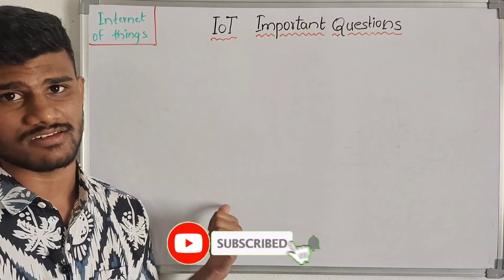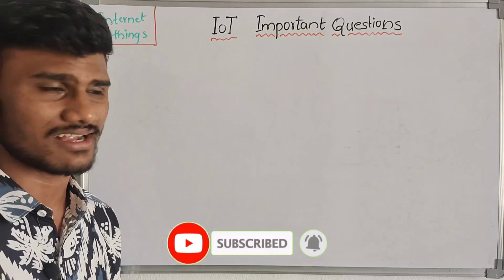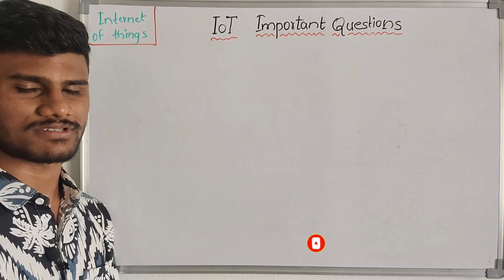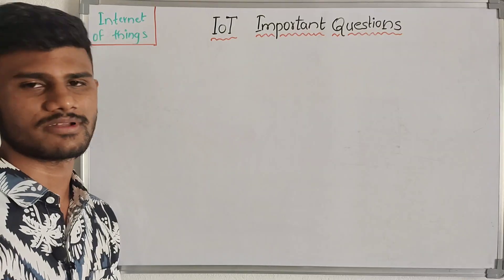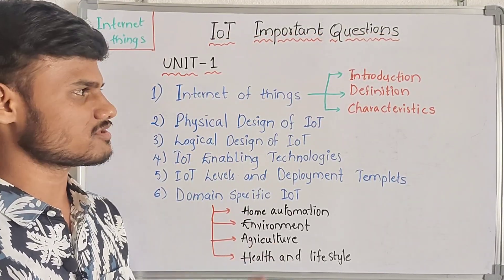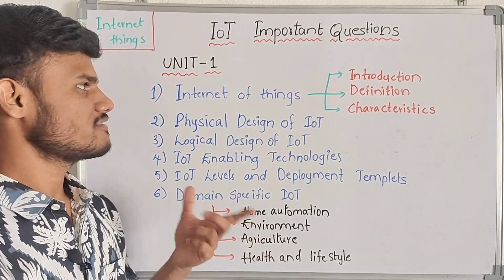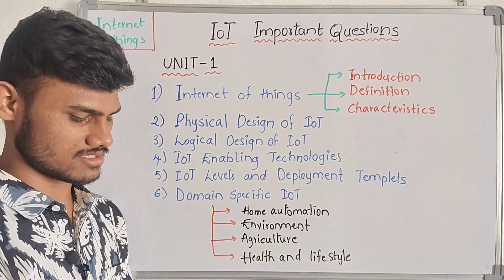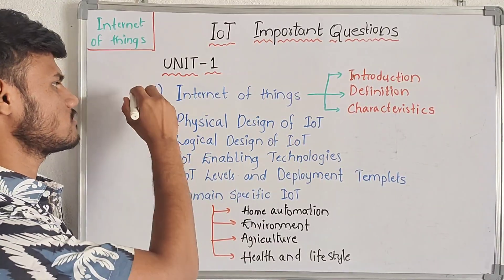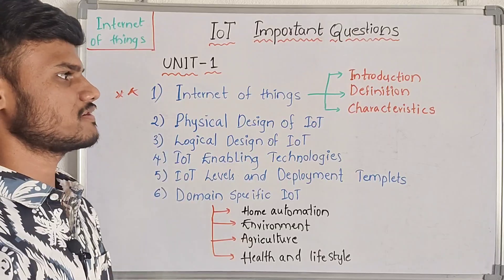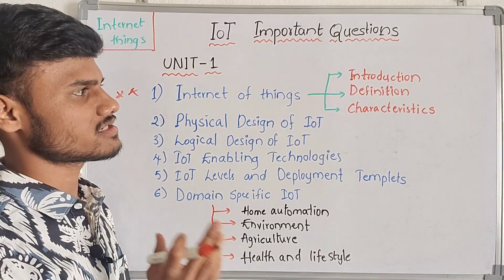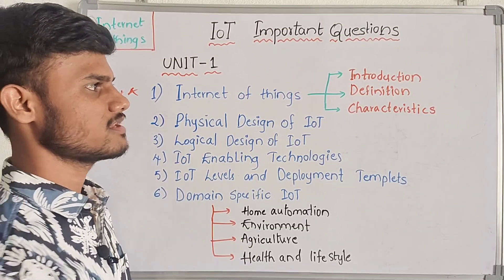So let us start. Now, coming to our first unit. This first unit is completely about basics of IoT. The number of basics — first is IoT. IoT is the main concept. The first question covers introduction, definition, and characteristics of IoT.